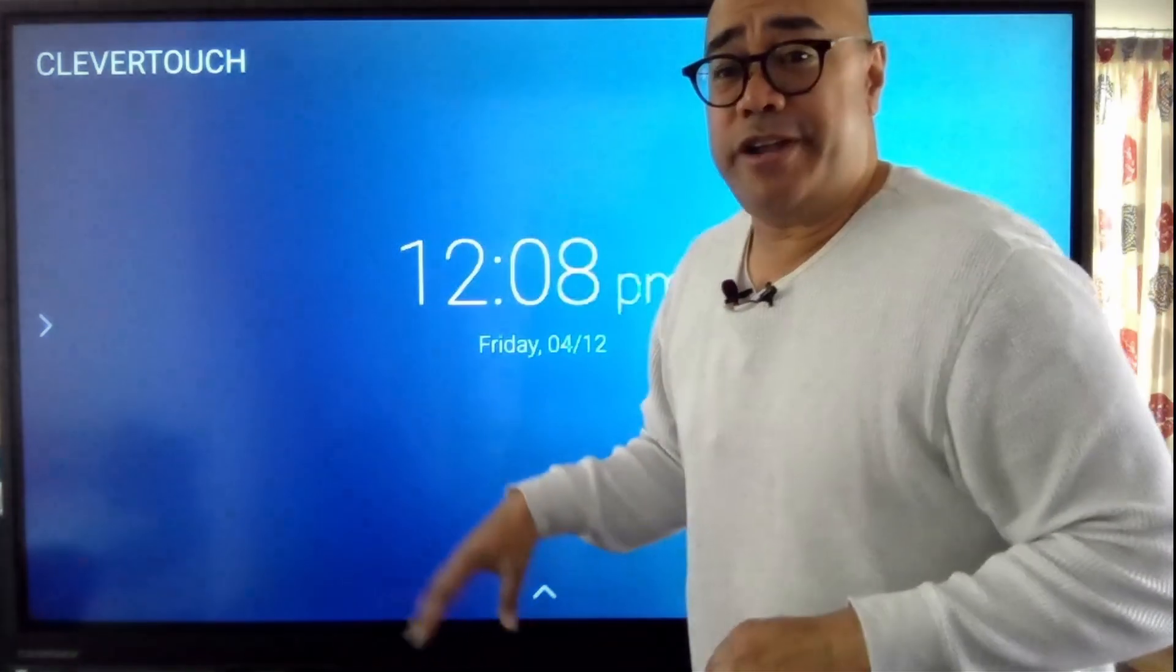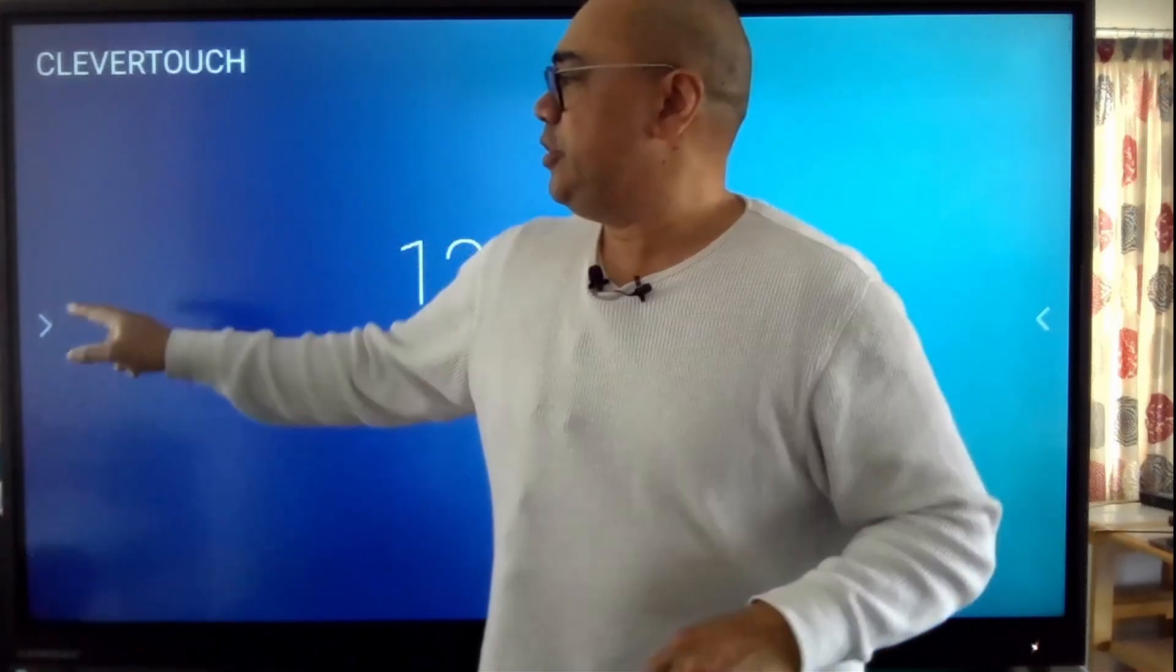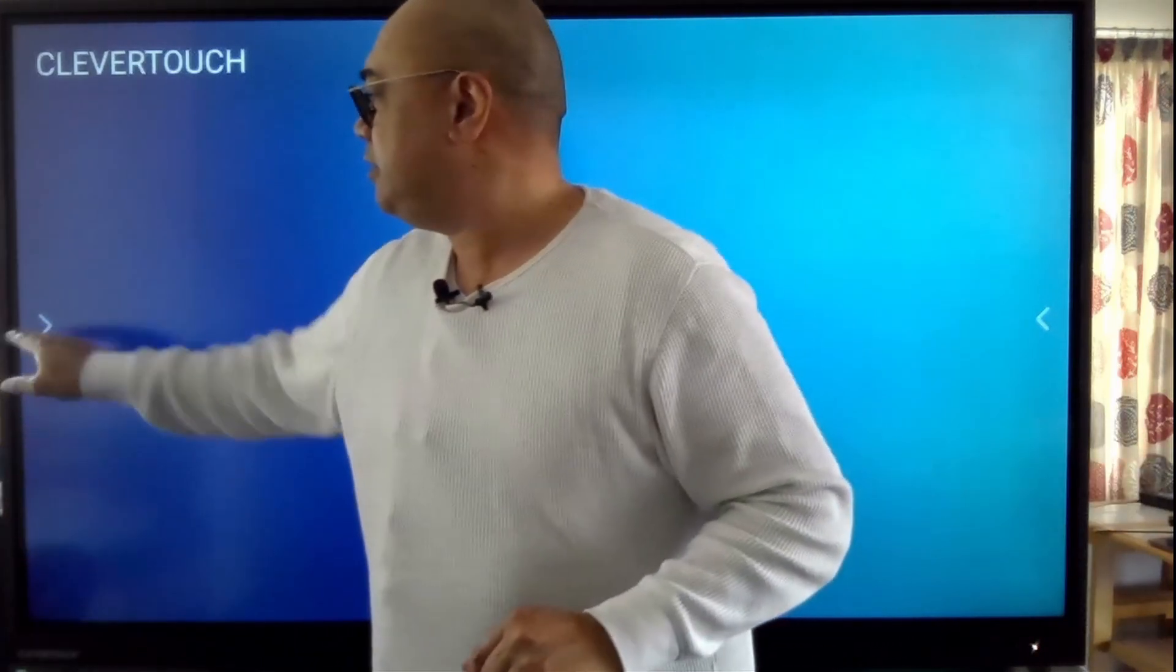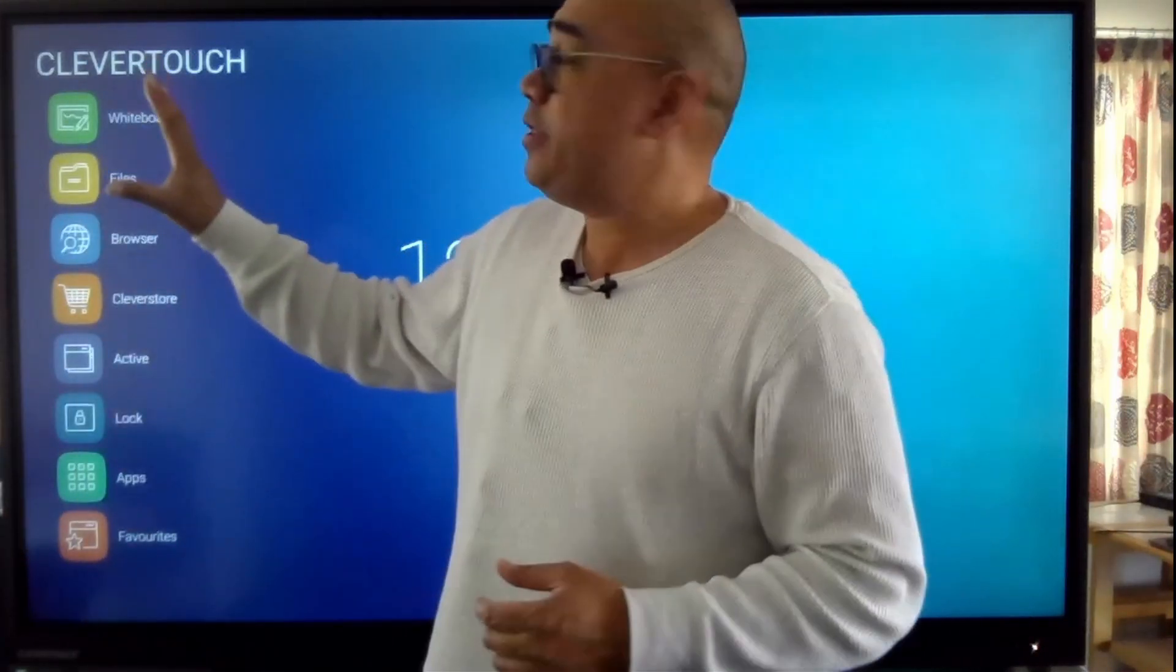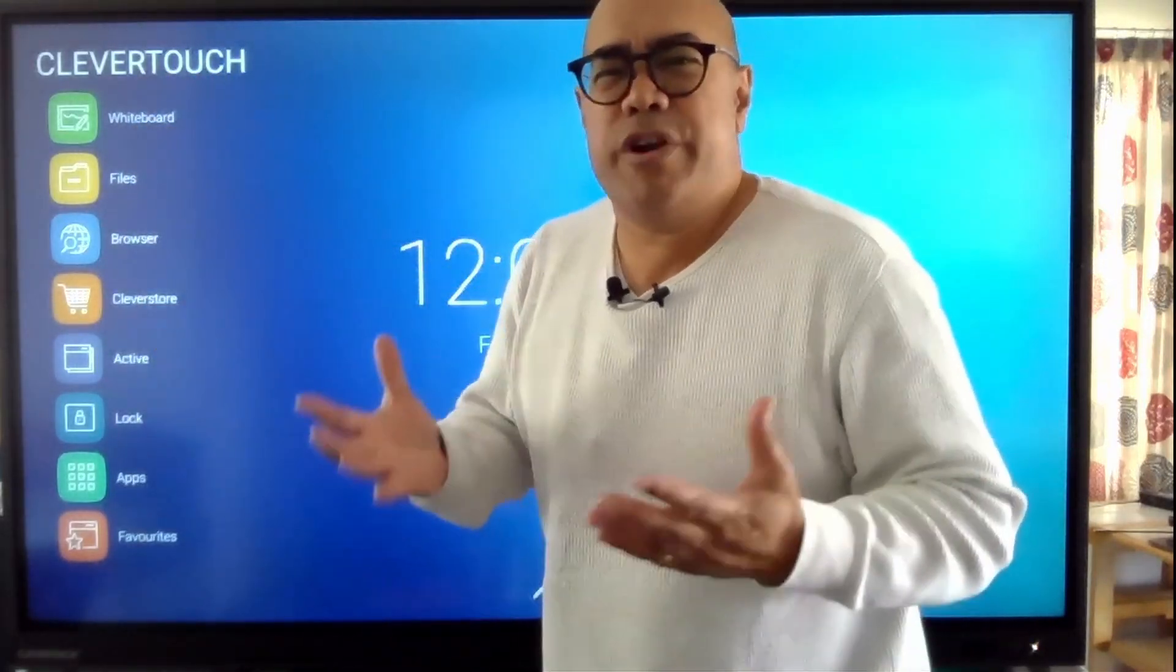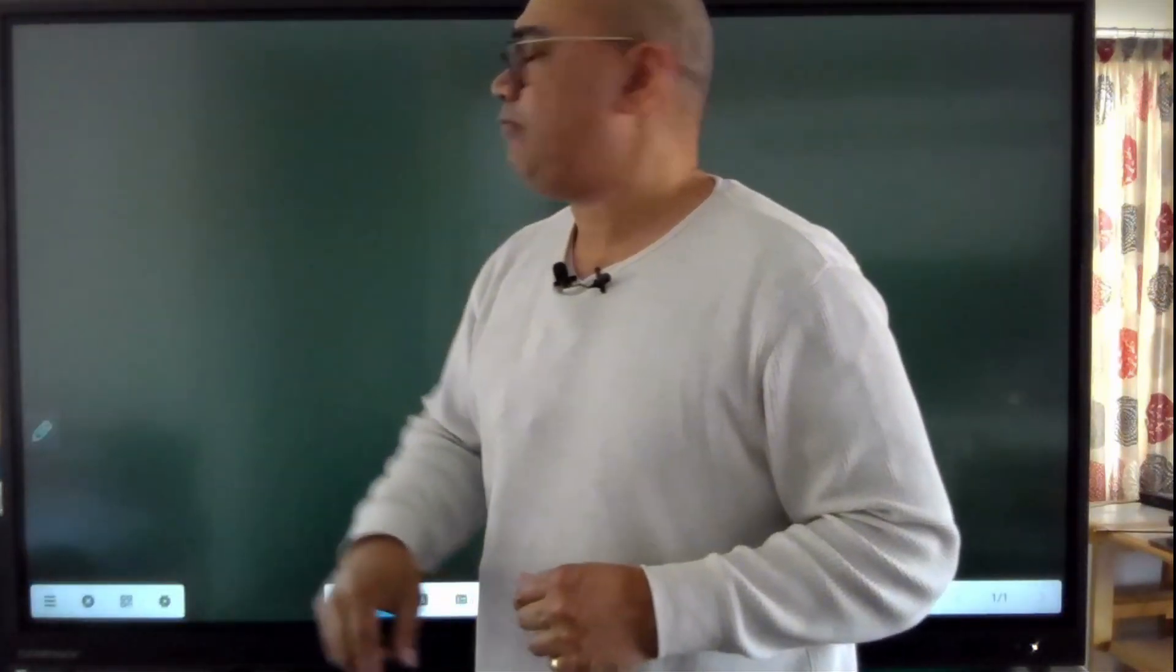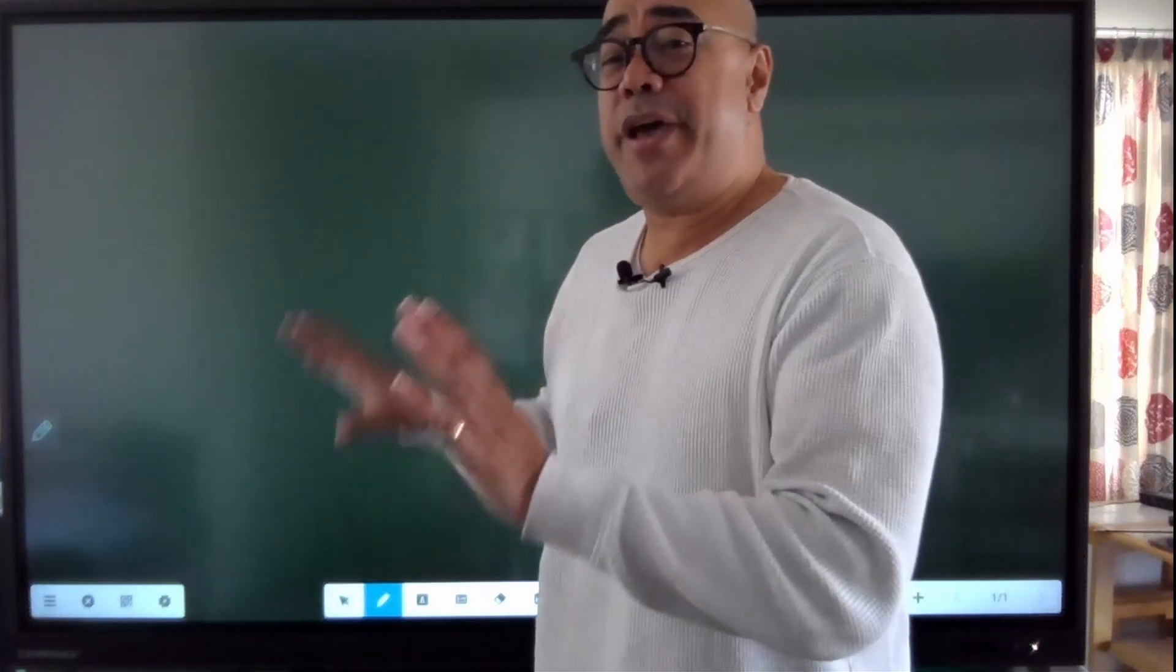This is how it will look when you get your Clevertouch. Once you've turned it on, it'll show you this screen. With the screen, you've got these little arrows to the side on both sides, so you can stand either side. When you press that, it comes up with this menu here. We're just going to go through whiteboard and files, real basics of those.